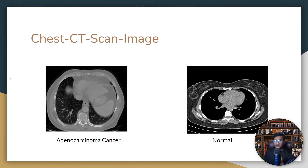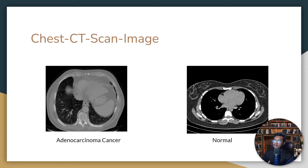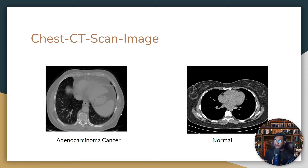Now let me tell you the problem statement we're going to solve. We'll be solving chest cancer classification. We've collected lots of chest CT scan images — I think you know what CT scan is. This project falls into the medical domain. We'll be trying to classify adenocarcinoma cancer. This is the chest CT scan image, and this is the adenocarcinoma cancer — the affected chest CT scan image. And this is the normal chest image. Our task is to classify adenocarcinoma cancer from the chest image itself — our model will try to classify whether the chest has been affected with this cancer or not.